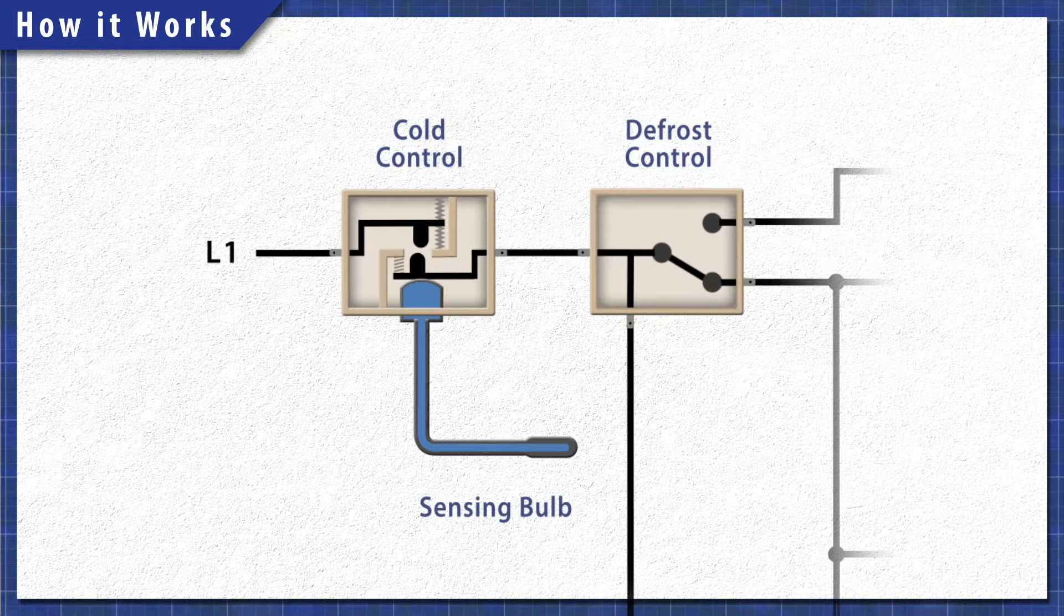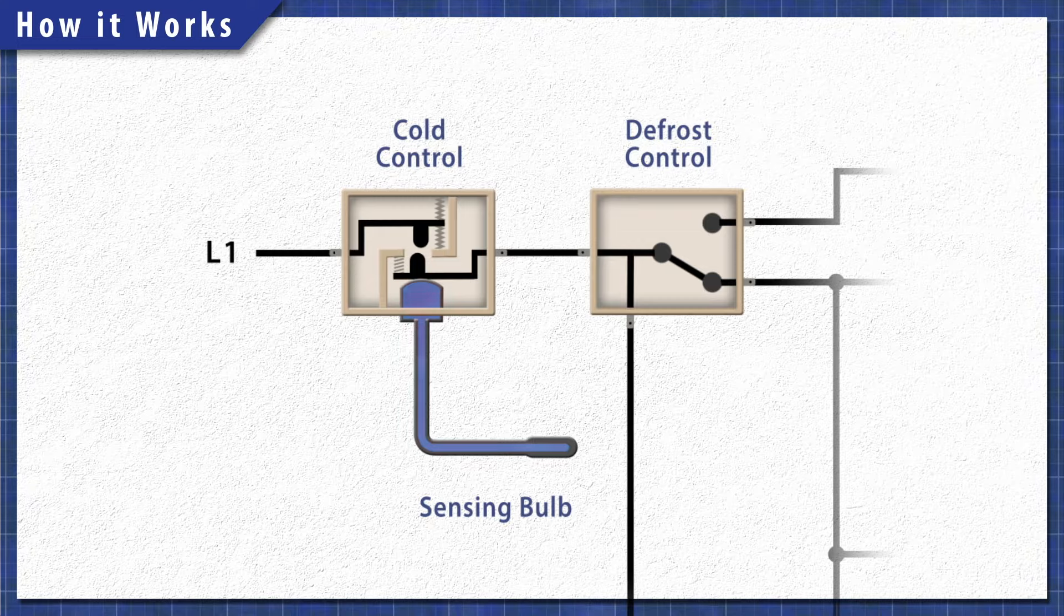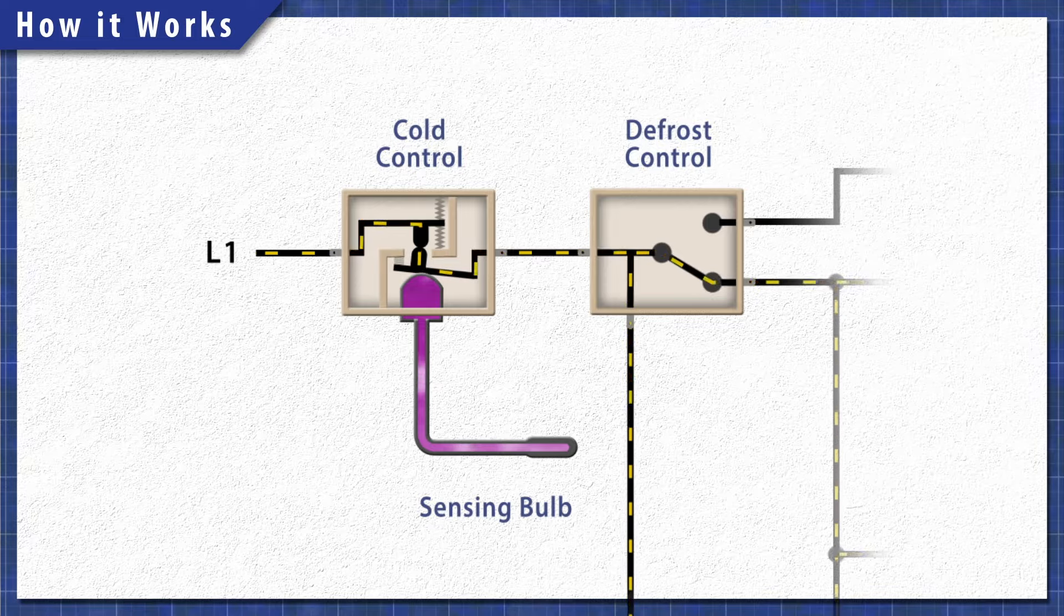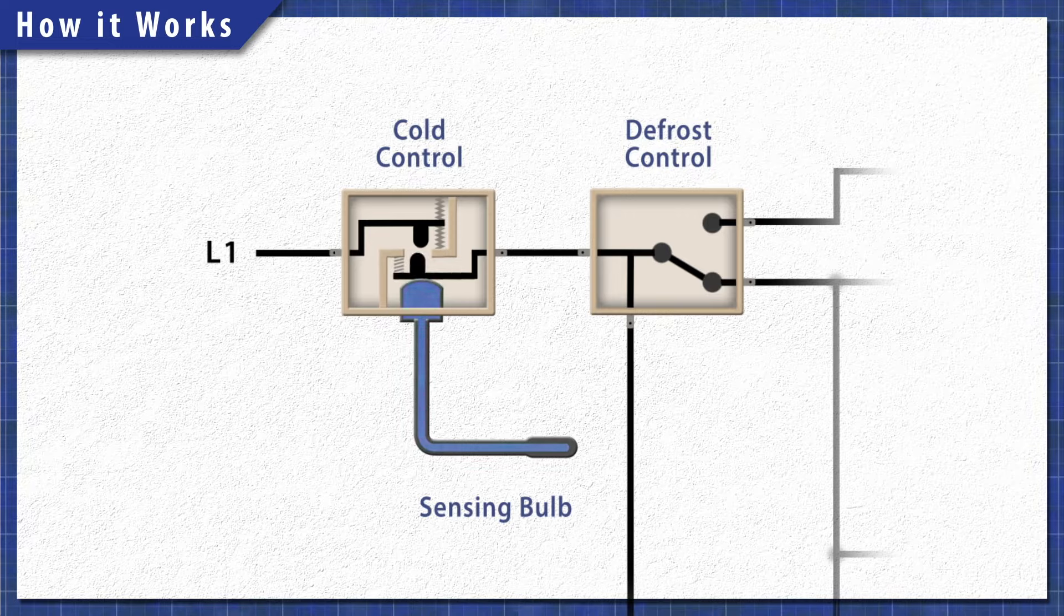The sensing bulb contains fluid that expands when it heats up. This pushes the contacts closed, which connects power to the cooling circuit. When it cools, the contacts open and the compressor shuts off.